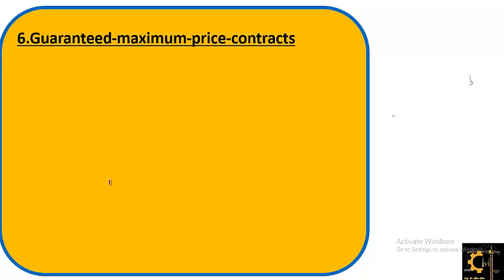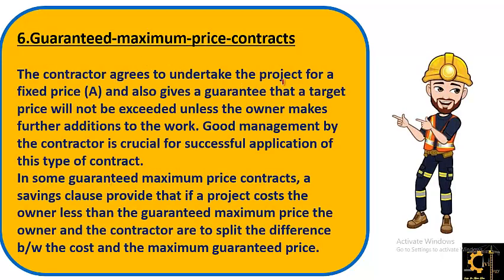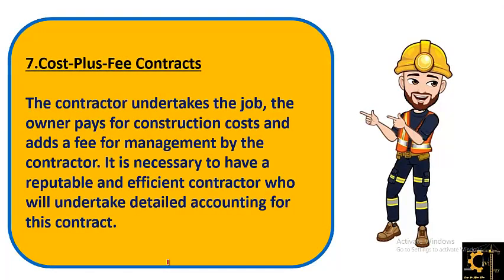The sixth one is guaranteed maximum price contract. The contractor agrees to undertake the project for a fixed price and also gives a guarantee that the target price will not be exceeded unless the owner makes further additions to the work. Good management by the contractor is crucial for successful application of this contract type. In some guaranteed maximum price contracts, a savings clause is provided: if the project costs the owner less than the guaranteed maximum price, the owner and contractor split the difference.